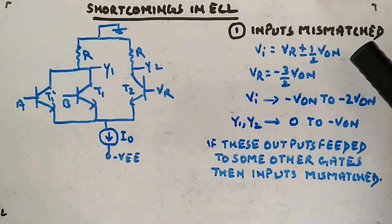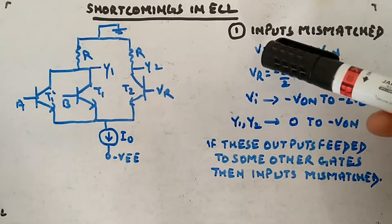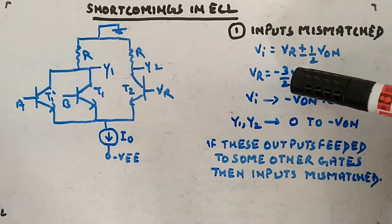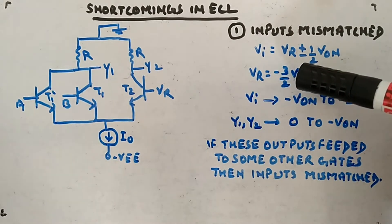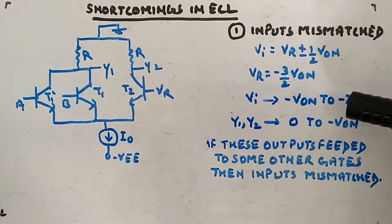So first, I am telling you about the shortcomings. First shortcoming is inputs are mismatched. We have seen the criteria: VI can be plus minus half VON from VR, and VR will be minus 3 by 2 VON.